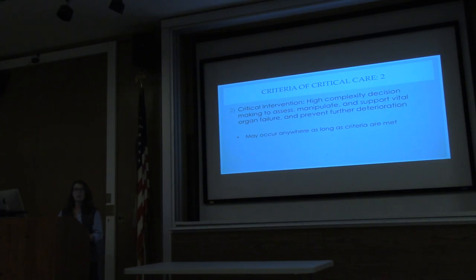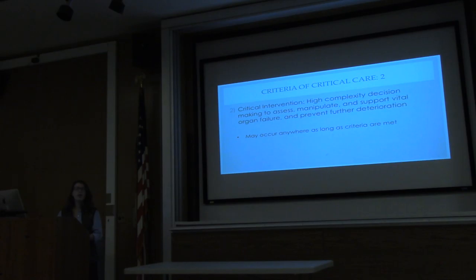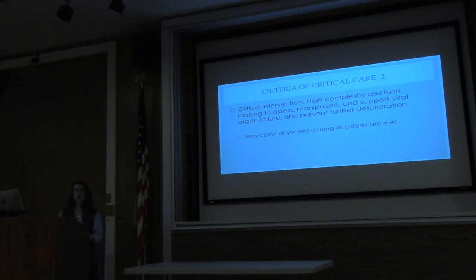The second tenet is there has to be a critical intervention, which involves high complexity decision-making to support organ failure and prevent further deterioration. The literature states that typically this occurs in an ED, ICU, or surgical post-surgical setting, but it also states that technically it can occur anywhere. For those of us at UHB who've had a code 66 or code 99 in an endoscopy suite — if you're there and you perform critical care there, you can count that towards critical care time.